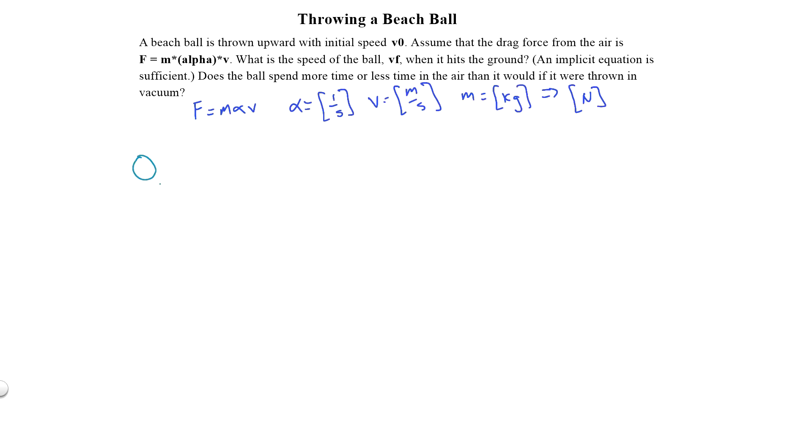So if we threw an object in the air and it had an initial velocity, what we're going to have is basically the weight of the object, so Mg.